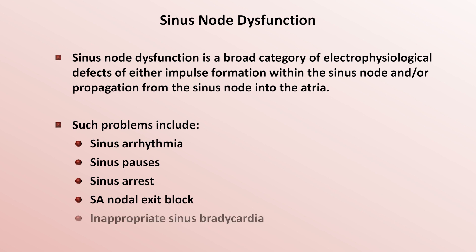Defects also include an inappropriate sinus bradycardia, which is not defined by a specific bradycardic threshold in terms of beats per minute, but is instead more vaguely defined as a heart rate insufficient to meet the body's demand. Similar to this is something called chronotropic incompetence — an inability of the patient's heart rate to increase in response to increased physical activity or other increases in physiologic demand.